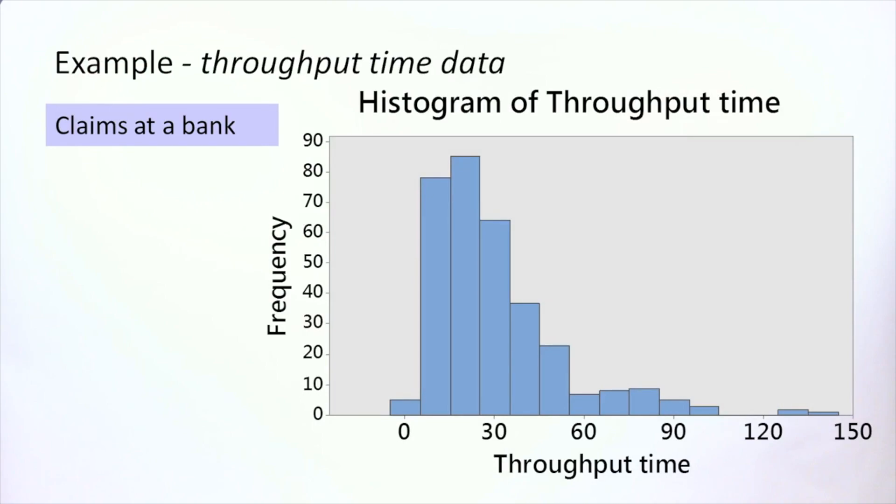I have collected data on throughput times of handled claims at the bank, and this is the histogram of our throughput times. I can fit the normal distribution curve. Does it fit well?